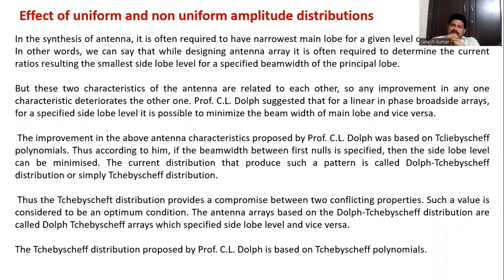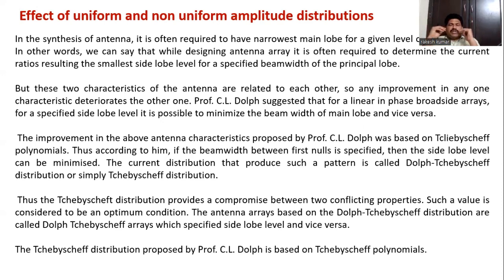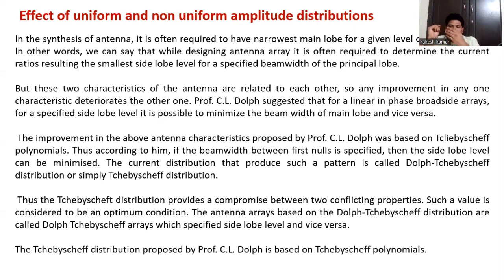The side lobe level ratio (SLR) is the magnitude of the side lobe to the magnitude of the major lobe. For example, a customer may specify: I want my side lobe level to be 20 dB or 30 dB. The ratio of side lobe level to main lobe level, SLR, should be 30 dB. How do we design that?